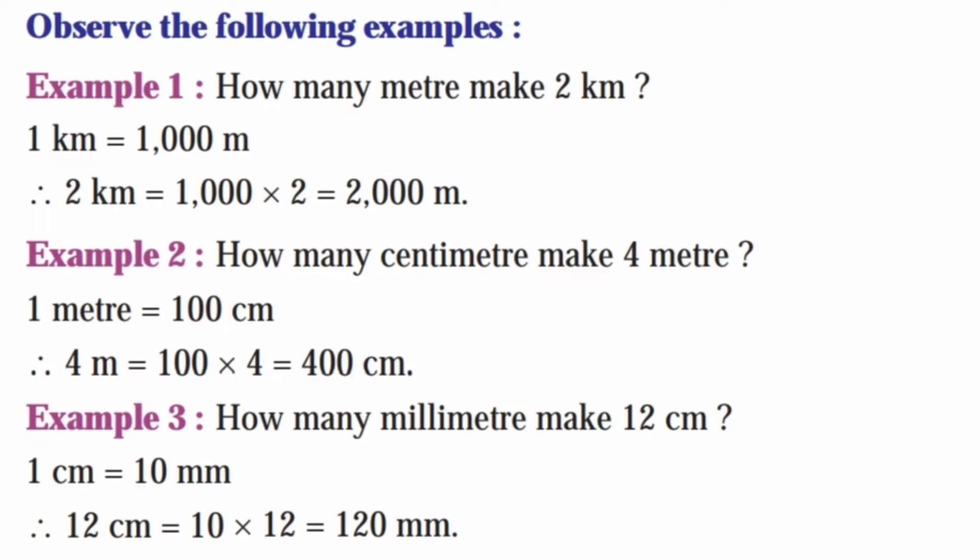Example 3: How many millimeters make 12 centimeters? 1 centimeter is equal to 10 millimeters. So, 12 centimeters equals 10 into 12, which is 120 millimeters. So, when doing this type of conversion, we should multiply.